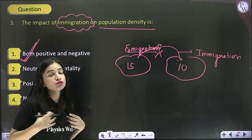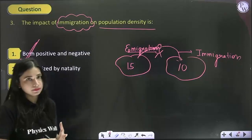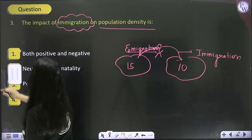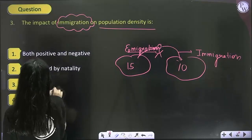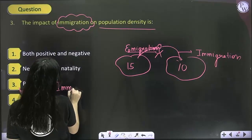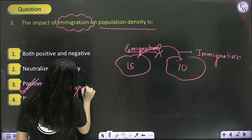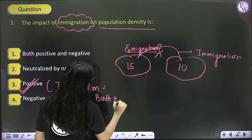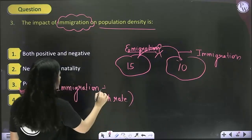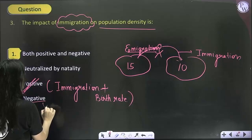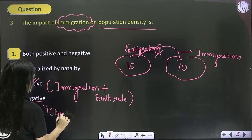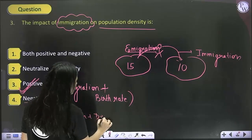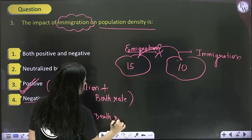In short, immigration is actually a plus effect only on the receiving population. Birth rate and immigration both have a positive impact on population, whereas emigration and death rate have a negative impact on population density. So the answer becomes option 3.